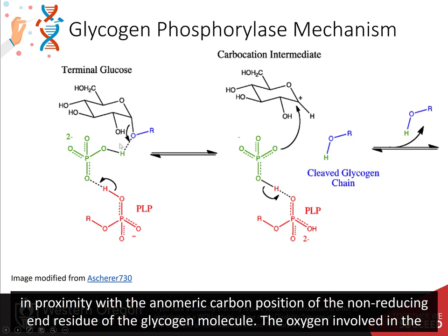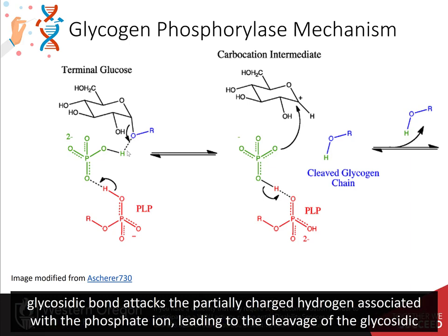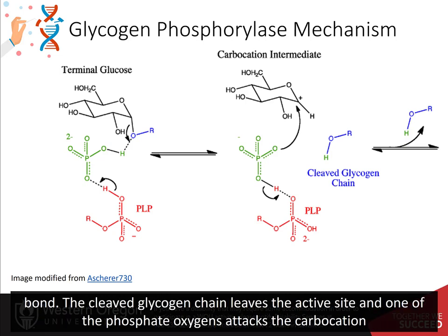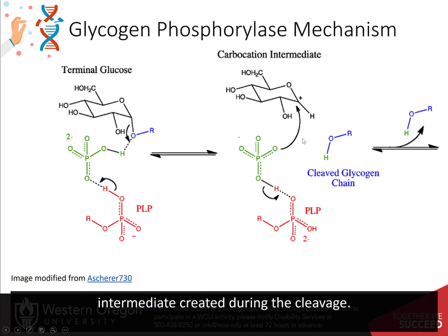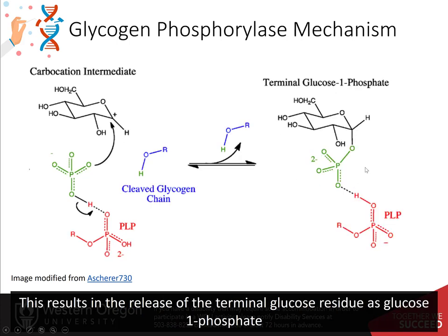The oxygen involved in the glycosidic bond attacks the partially charged hydrogen associated with the phosphate ion, leading to the cleavage of the glycosidic bond. The cleaved glycogen chain leaves the active site, and one of the phosphate oxygens attacks the carbocation intermediate formed during the cleavage. This results in the release of the terminal glucose residue as glucose-1-phosphate.